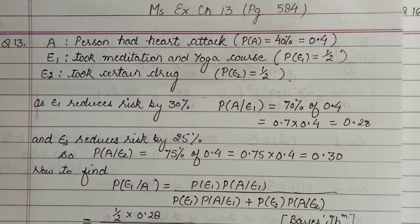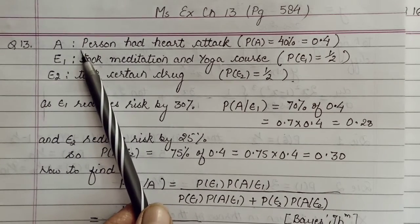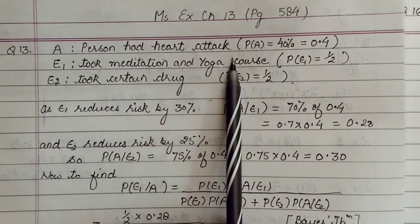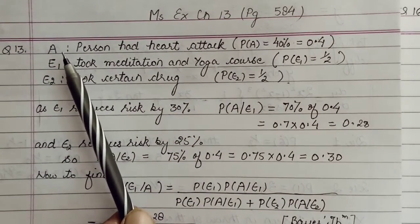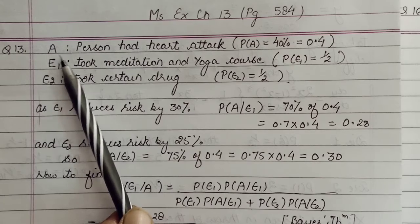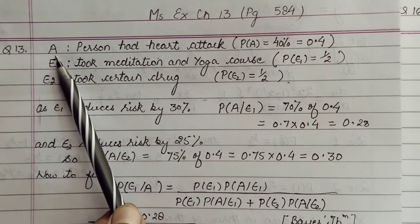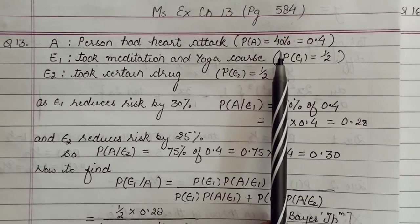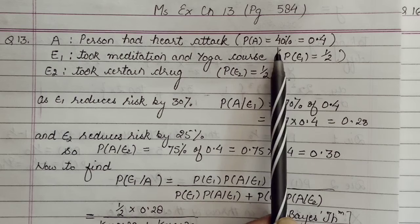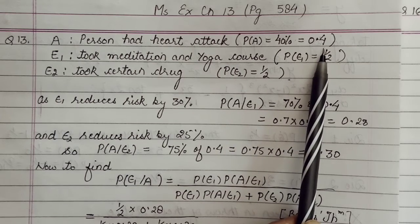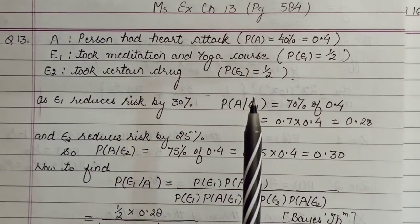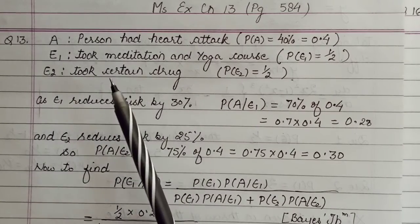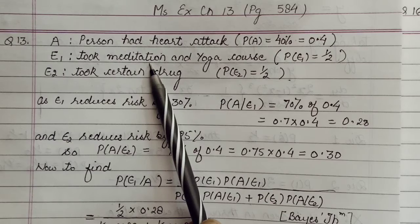So you have been told the given condition that the person had a heart attack. So the person had a heart attack will be taken as event A, whose probability has been mentioned as 40 percent - 40/100 which becomes 0.4. Now, two ways people can opt for were given: either they can go for meditation or second, they can go for drug.